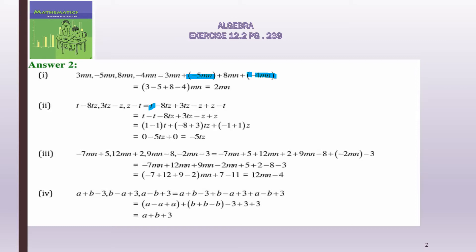t is here and minus t is here, so t minus t will cancel with each other — you can write 1 - 1 or simply cancel them, since one is positive and one is negative. Then minus 8tz plus 3tz: the minus term is bigger, so minus comes down and 8 - 3 = 5, giving minus 5tz. Similarly, minus z and plus z cancel. So minus 5tz is the answer.